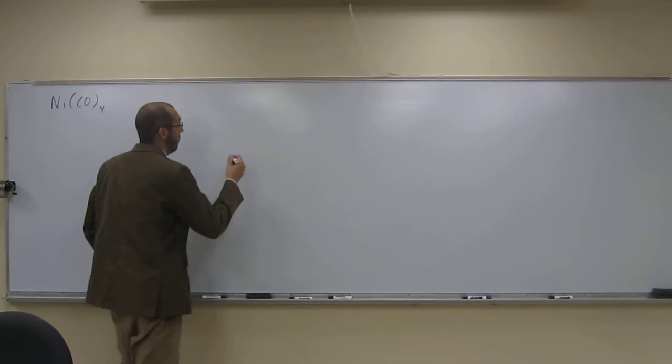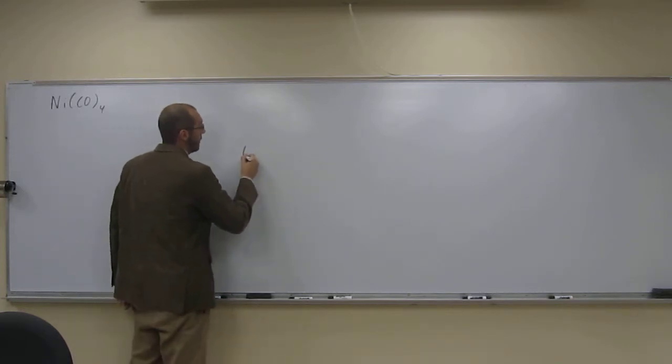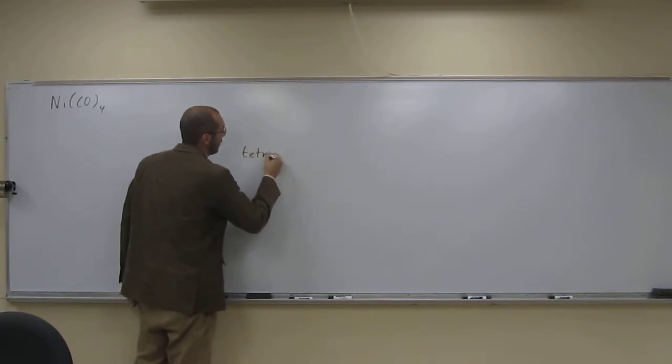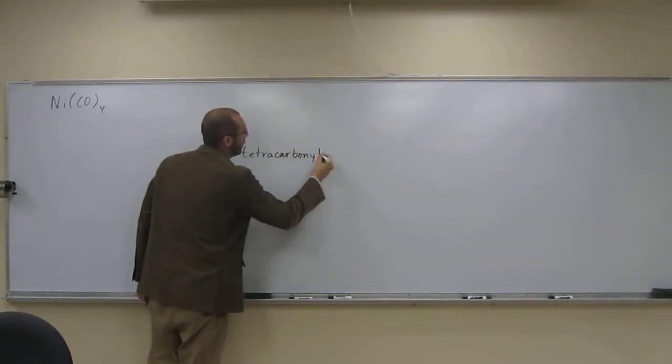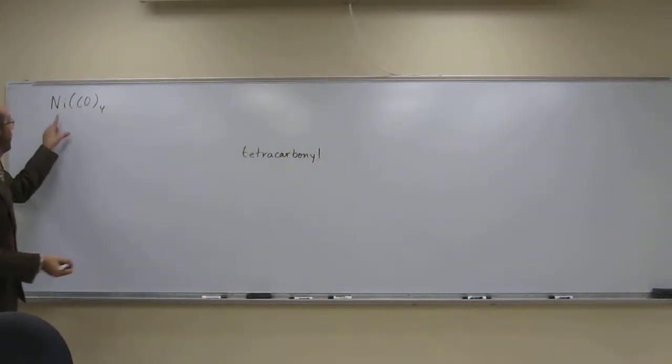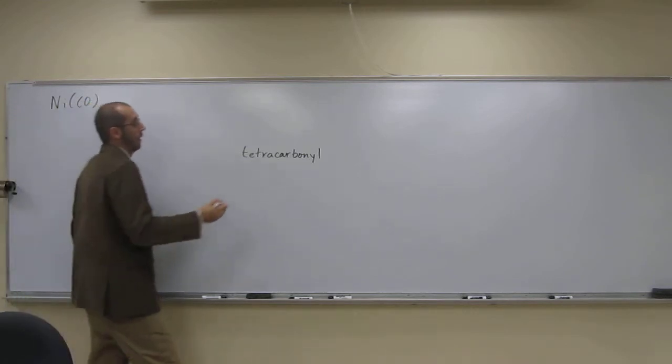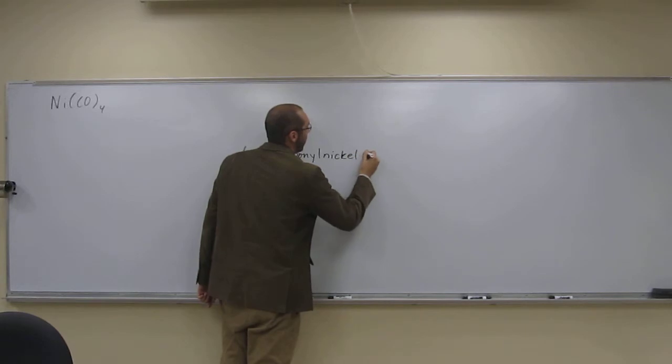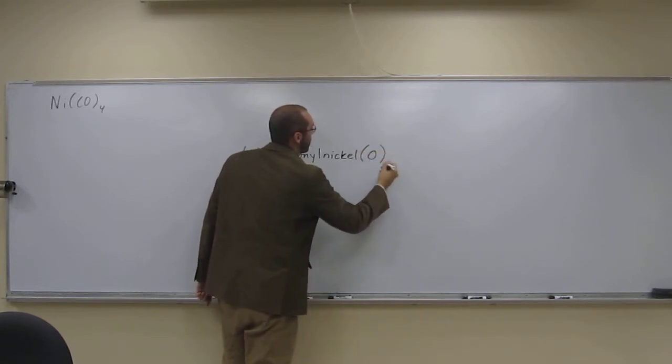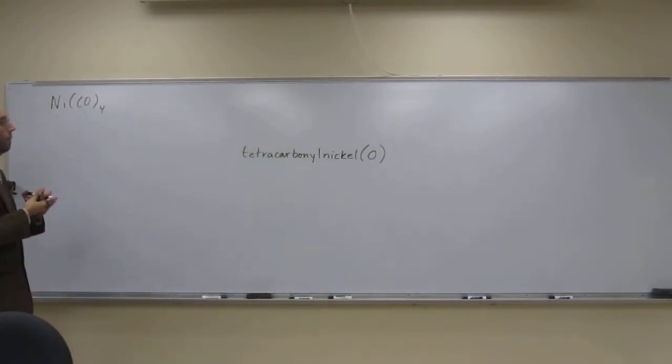Since there's four of them, we put a prefix of tetra. So tetracarbonyl. Then we put the metal atom, which is nickel, and write its oxidation state in parentheses. So the name of this compound is tetracarbonyl nickel zero.